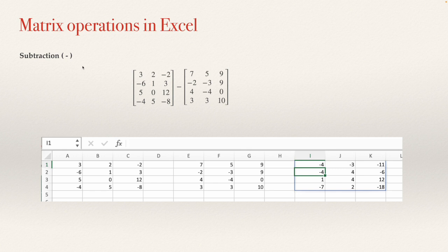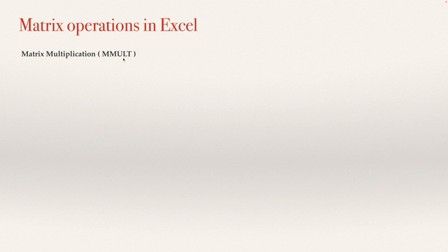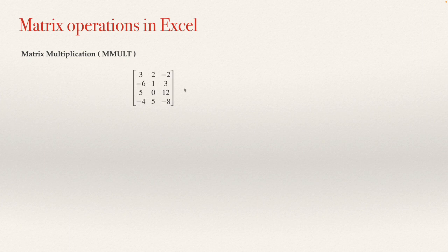Let's see how to make matrix multiplication. For matrix multiplication, we use a function called MMULT. This function has two arguments because you need to multiply two matrices. You will type MMULT, open bracket, and put the two arguments inside the function. The number of columns in the first matrix needs to equal the number of rows in the second matrix.